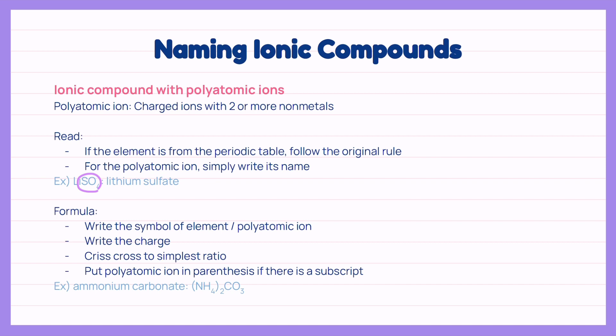The formula of ionic compounds with polyatomic ions is very similar to simple ionic compounds. We write down the symbol for each element and polyatomic ion with charge. Then crisscross the charges into the simplest ratio. If there is a subscript for the polyatomic ion, we put the polyatomic ion in parenthesis and then write the subscript.